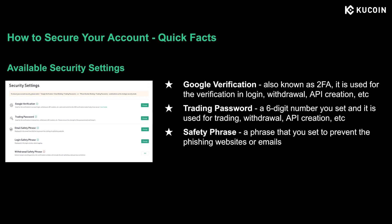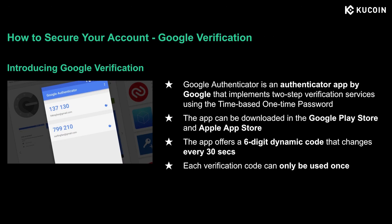Then safety phrase — it is a phrase that you set to protect you from phishing websites or emails. Now let's look deeper into each setting. Google Authenticator, as the name tells, is an authenticator app offered by Google that implements two-step verification services using the time-based one-time password, or TOTP, which means it is a temporary passcode generated by an algorithm. The app can be downloaded in Google Play or the Apple Store. In the app, a six-digit dynamic code will show and it changes every 30 seconds. Please note that each verification code can only be used once — when it expires, you'll need a new code.